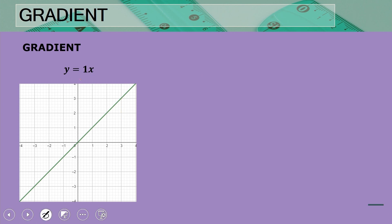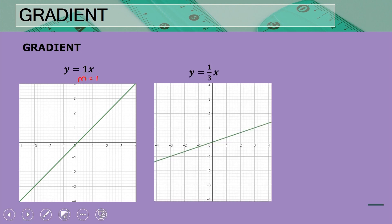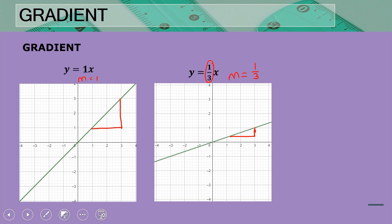Again we have a gradient of one, and now we compare it with a gradient of one third. One third is the smaller value, and it is evident in the graph as well — the line where the gradient is one third is more gentle than the line where the gradient is one, as clearly shown in the graph.